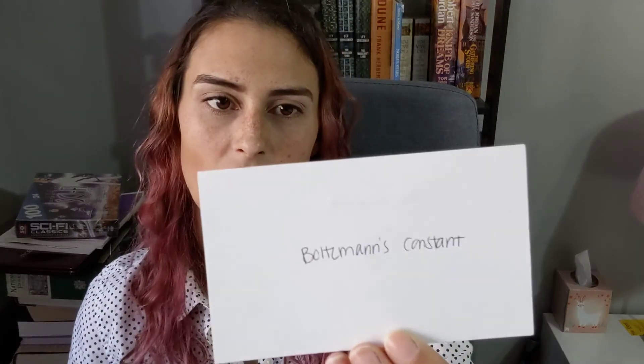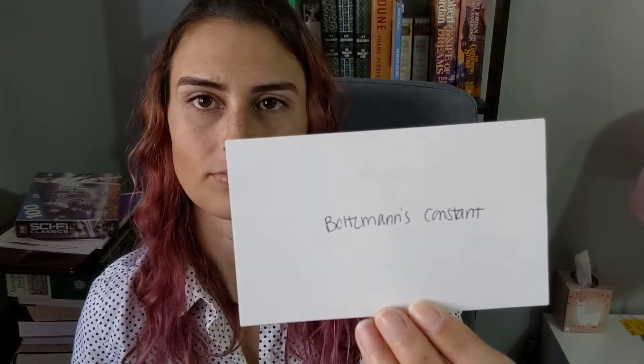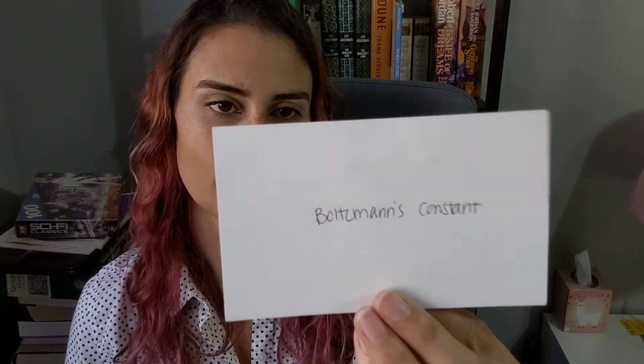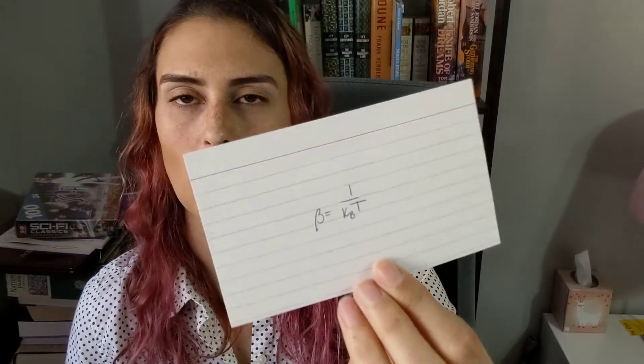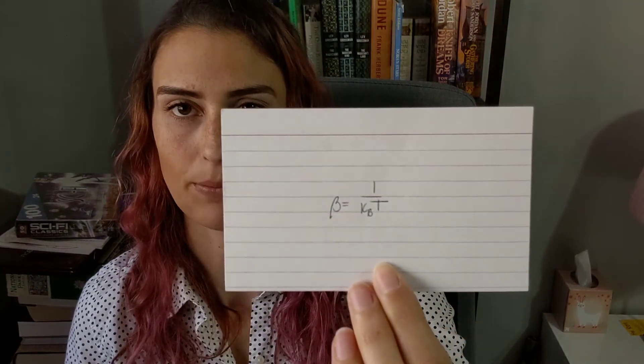Boltzmann's constant: beta is equal to 1 over k_B T.